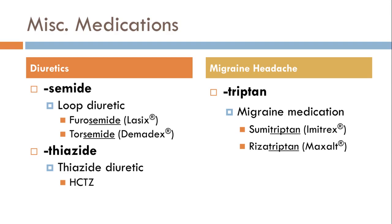Diuretics — or water pills — help you get off excess water to control blood pressure. The suffix '-semide' — s-e-m-i-d-e — indicates a loop diuretic. There are two classes: loop diuretics and thiazide diuretics. The loop diuretics to know are furosemide and torsemide, with brand names Lasix and Demadex.